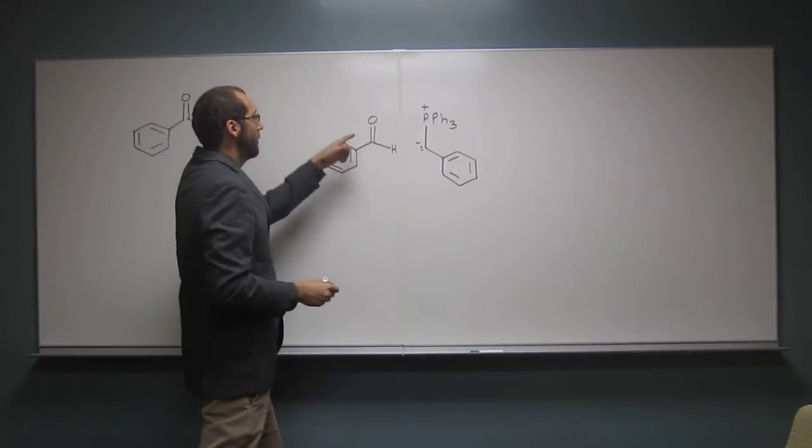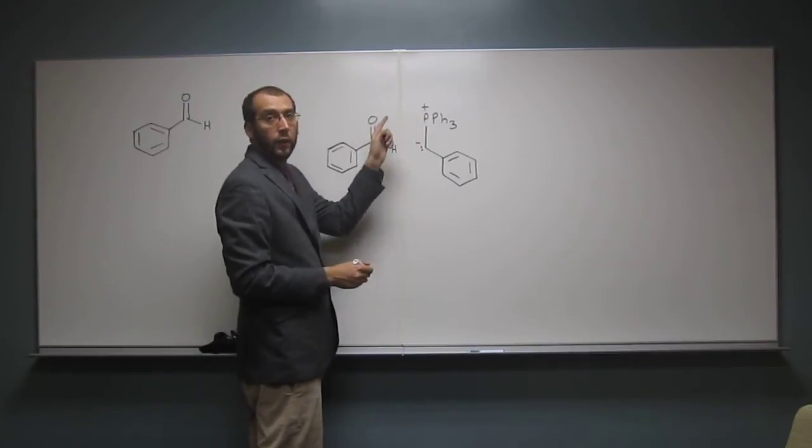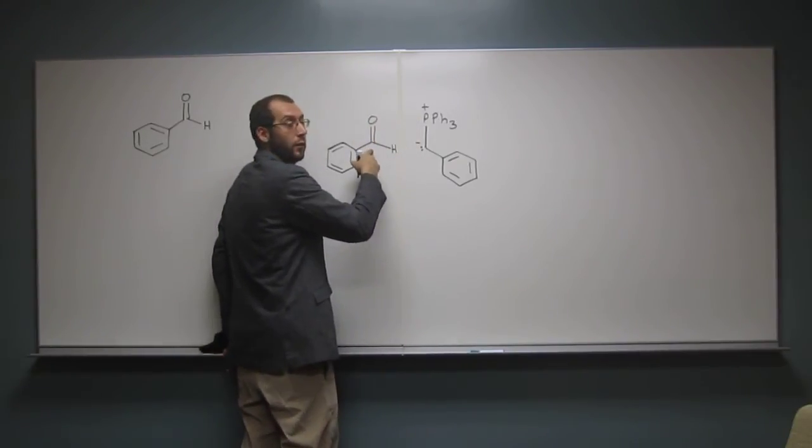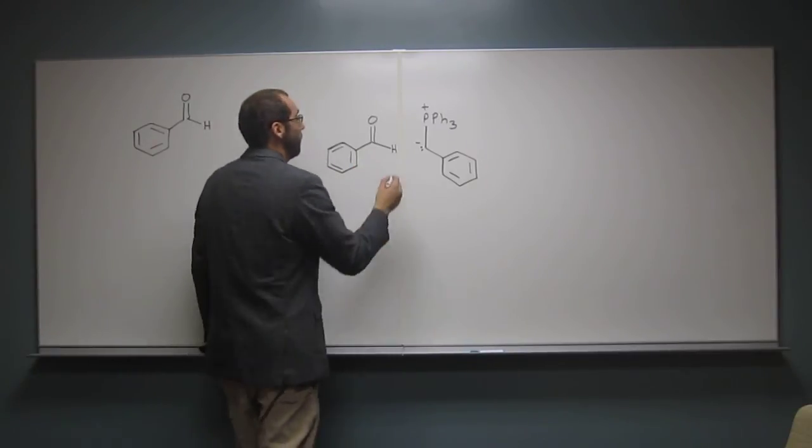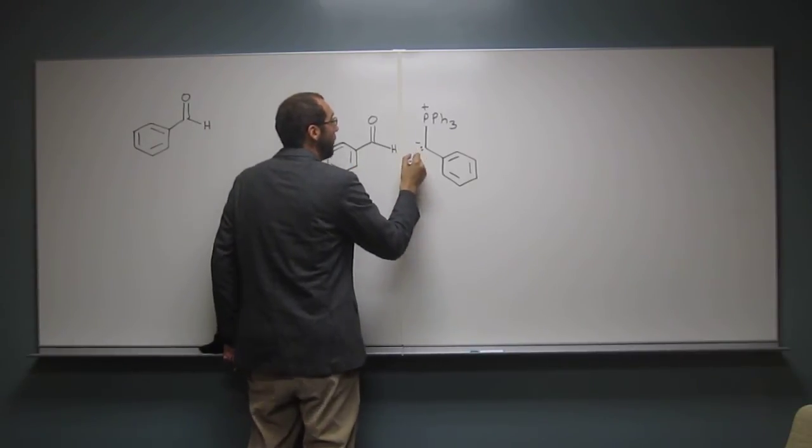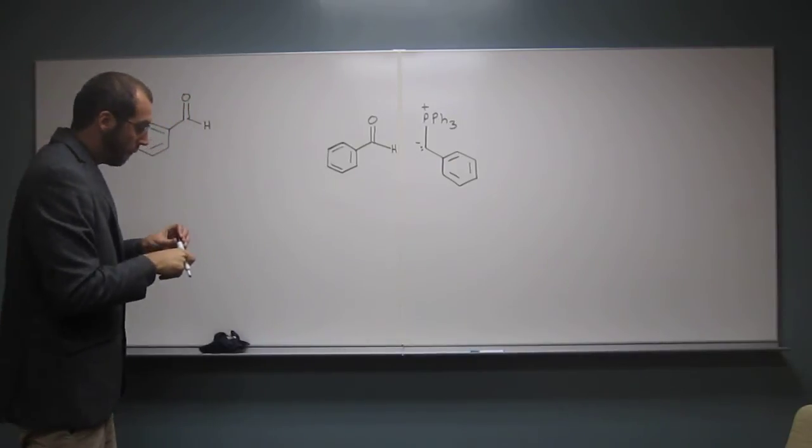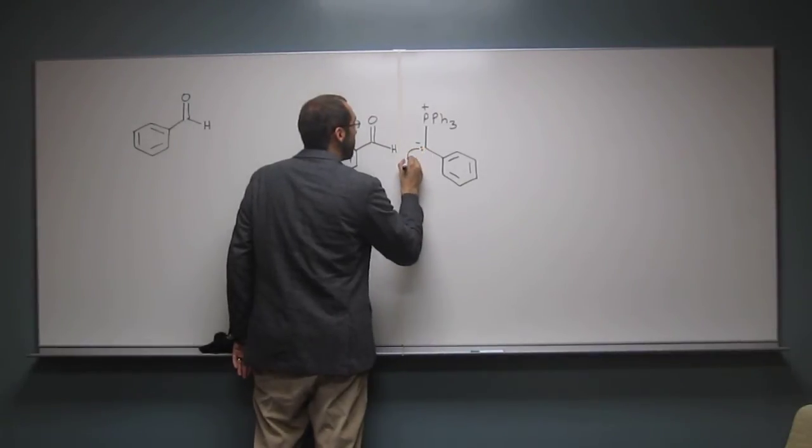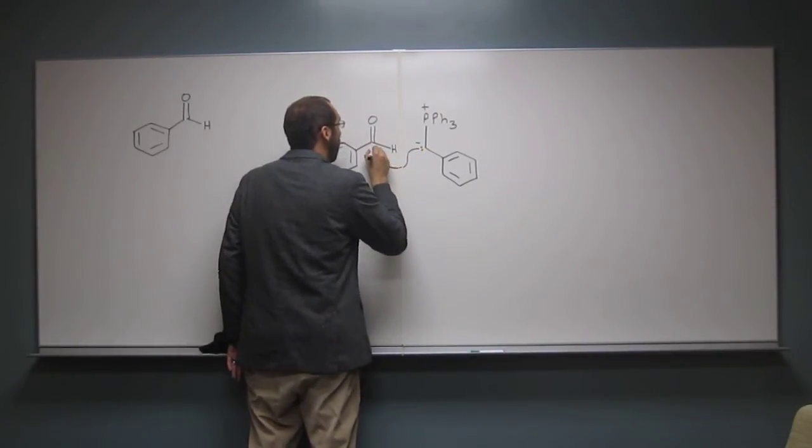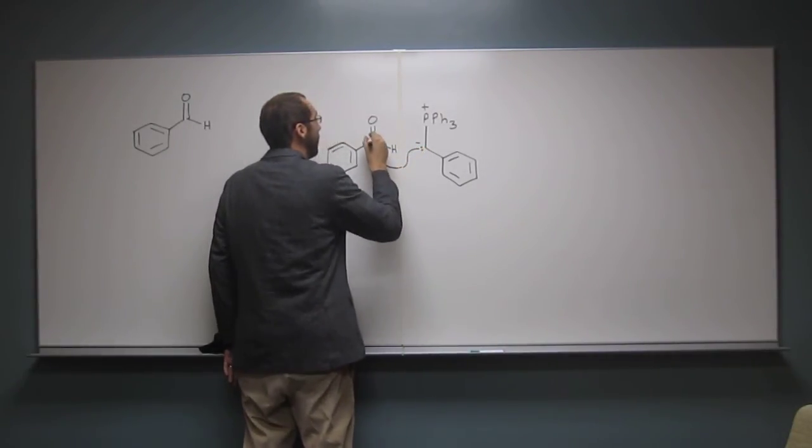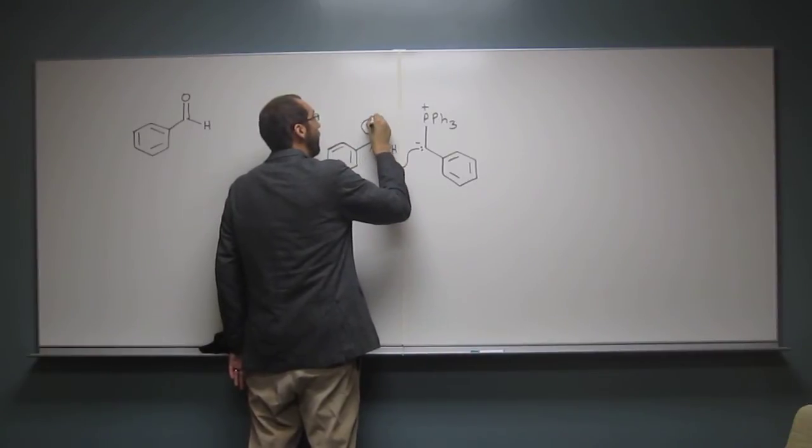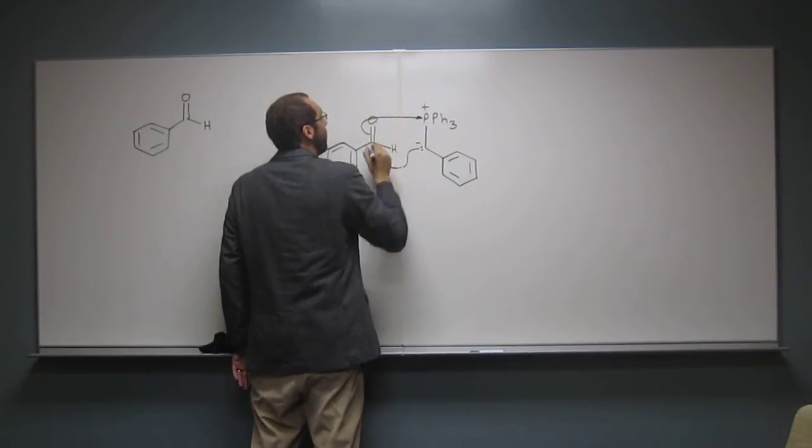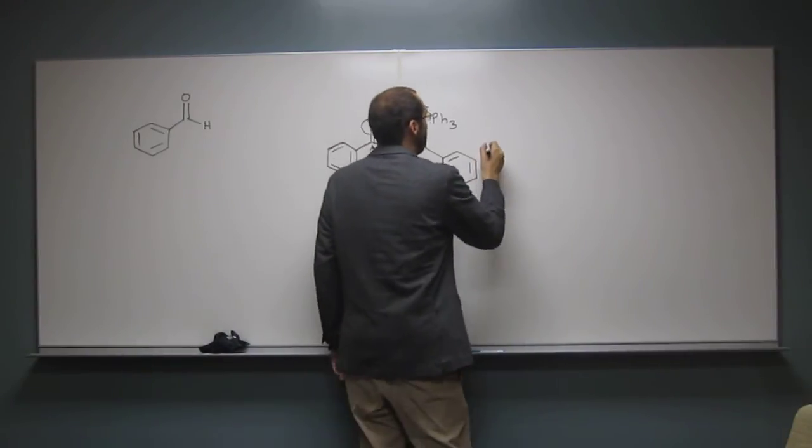So remember, phosphorus is oxyphilic. And also remember, the carbanion is going to attack the carbonyl carbon like nobody's business. So we're going to have a concerted reaction here to form the cis stilbene. So we're going to attack there. And the electrons from the carbonyl double bond are going to attack the phosphorus there.